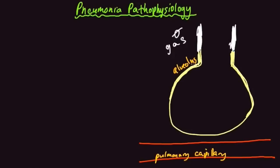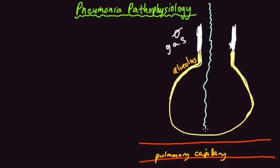Alveoli are little sac-like units, kind of clustered like grapes at the end of the airways. There are hundreds of millions of them that make up your lungs, and this is where gas exchange takes place. The air comes down — you breathe it in through your airways and it ends up in your alveoli, where it is really close to the pulmonary capillaries.